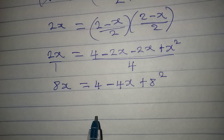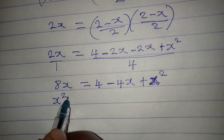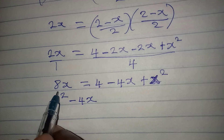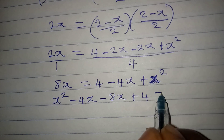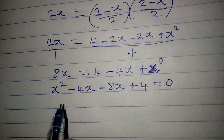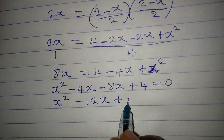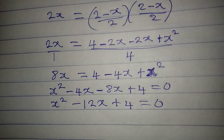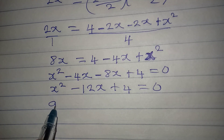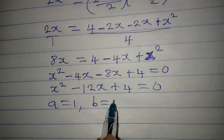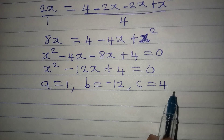Rearranging: write x² first, then minus 4x, then 8x becomes minus 8x since it moves to the other side, and then plus 4 equals 0. So we have x² minus 12x plus 4 equals 0. This is now a quadratic equation and we will solve it using the quadratic formula. Here a is 1, b is minus 12, and c is 4.